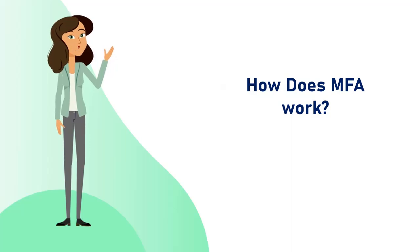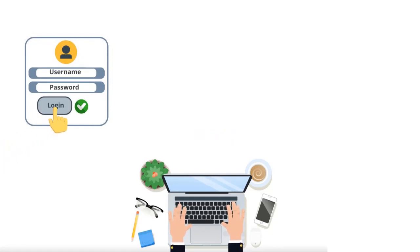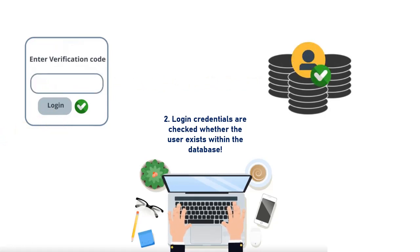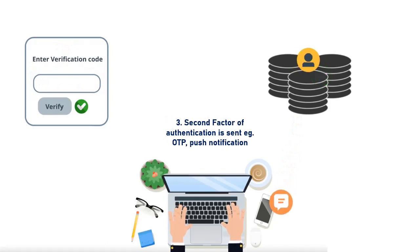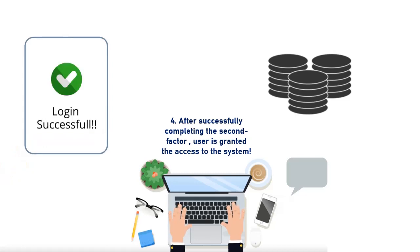Now let's see how MFA works. The user navigates to the application login page and submits their login credentials. The credentials are then checked against the stored credentials. If they match, the user is prompted for the second factor of authentication. The user then validates the second factor, which is verified against the authentication system. After successfully completing the second factor, the user is granted access to the system.